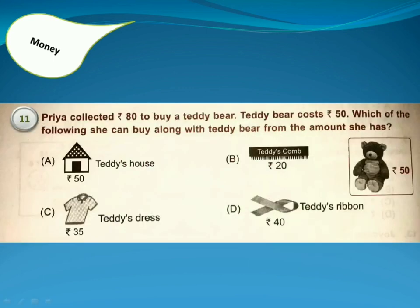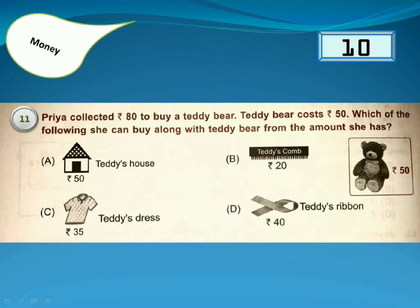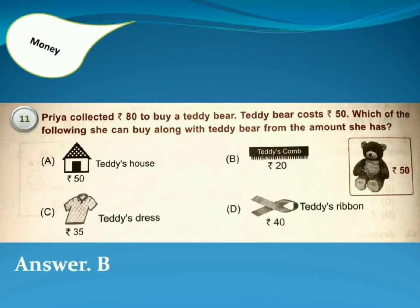Priya collected 80 rupees to buy a teddy bear. The teddy bear costs 50 rupees. Which of the following can she buy along with the teddy bear from the amount she has? Answer is Option B, because she is left with 30 rupees, so she can buy only the teddy's comb.